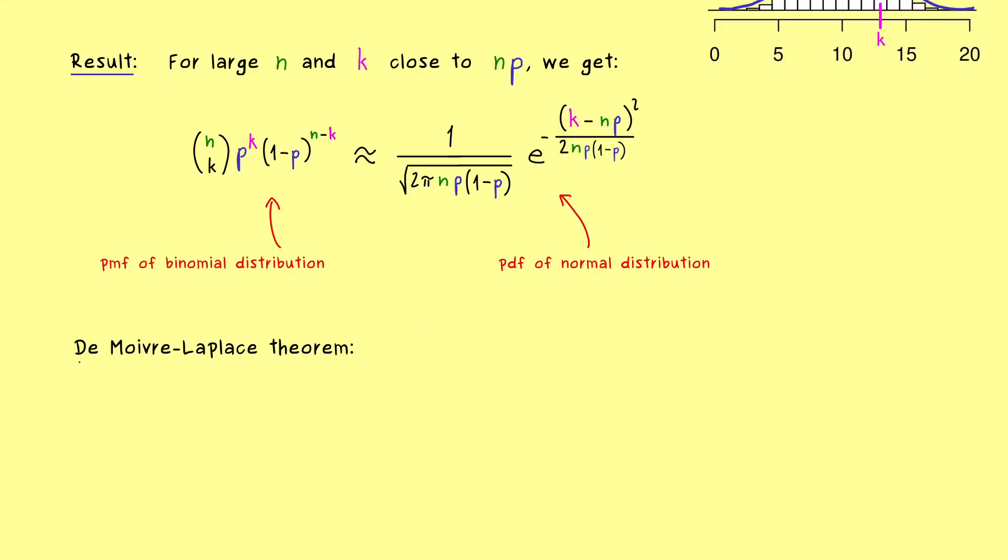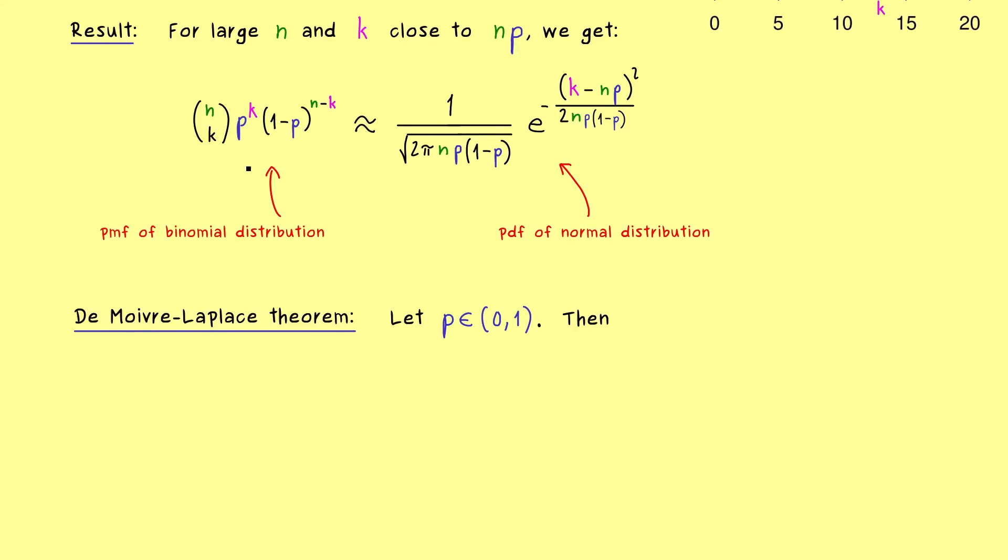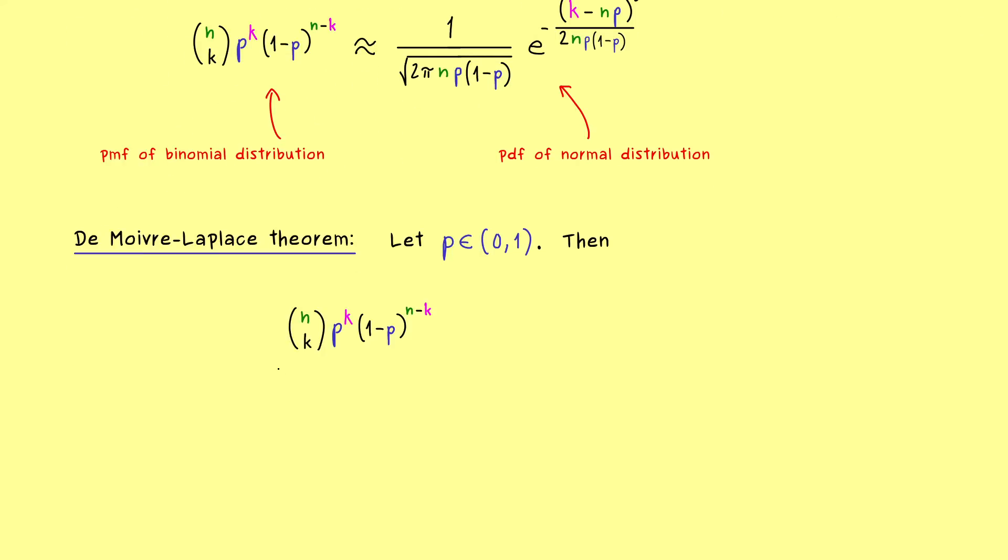Hence this will now be our explicit De Moivre-Laplace theorem. And in fact the only requirement we have there is that we have a p between 0 and 1. So everything in between is possible, but 0 and 1 are excluded. And now what we can do in the precise formulation is to look at the ratio of both instances here. Therefore we can take the pmf of the binomial distribution and divide it by the pdf of the normal distribution. And then what we get is a nice quotient, which should be roughly equal to 1. Hence if we subtract 1, we have a number close to 0. And we are not really interested in the sign of that number, so we can take the absolute value to make it positive.